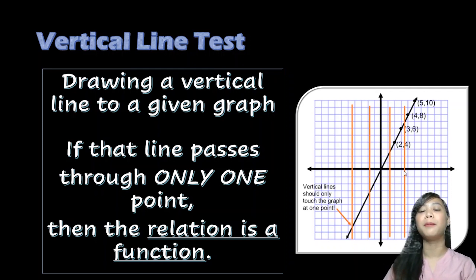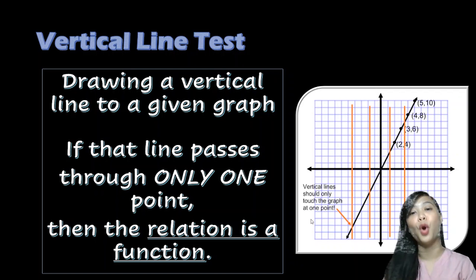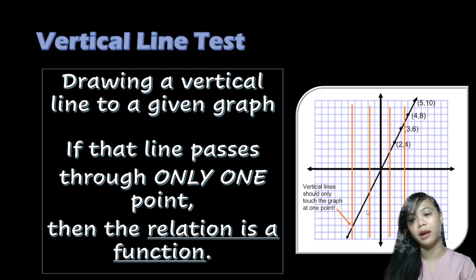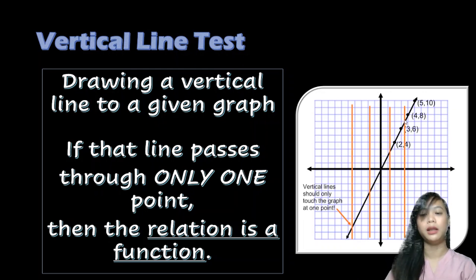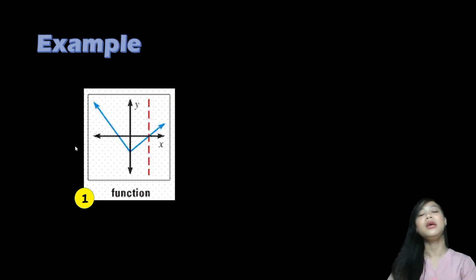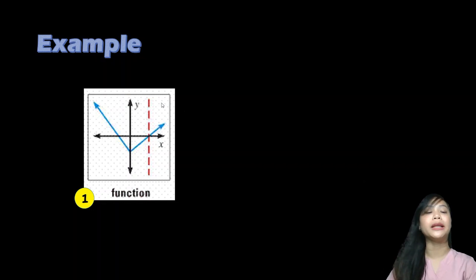In this illustration, we have red lines which are the vertical lines used to test whether a graph is a function or not. In this first example graph, the vertical red lines each touch only one point — this point, this point, this point, and this point. So this is an example of a function. The second graph is also a function because the dashed line only touches one point.